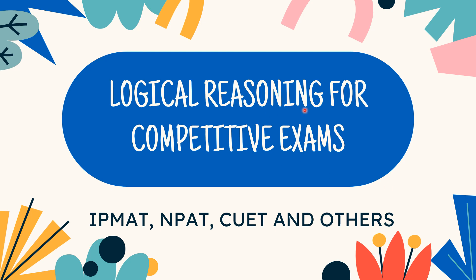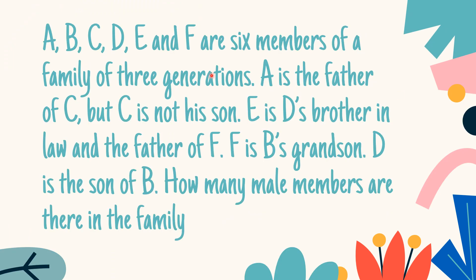In our series of logical reasoning for competitive exams, we've come up with the next question which says that A, B, C, D, E, and F are six members of a family of three generations. A is the father of C but C is not his son. E is D's brother-in-law and the father of F. F is B's grandson. D is the son of B. How many male members are there in the family?